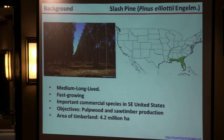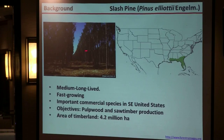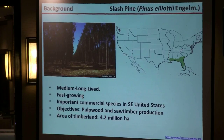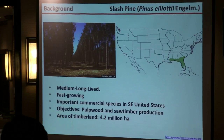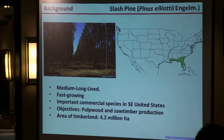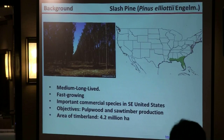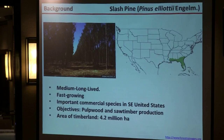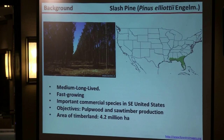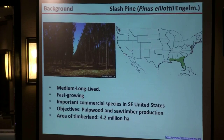This is a typical image of a slash pine plantation at about 15 years old, and on the right we have the distribution of the species in the southeast United States. The range extends from South Carolina to Louisiana, covering Georgia, Alabama, and Mississippi. Slash pine is a medium to long-lived, fast-growing species and the second most important commercial species in the southeast United States. The objective of plantations is pulpwood and sawtimber production, and the area of timberland is about 4.2 million hectares.